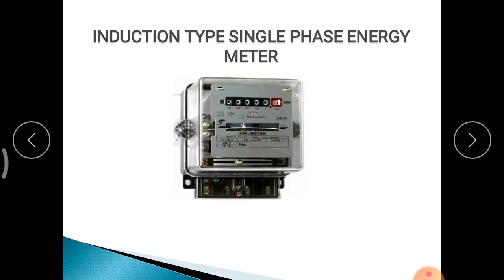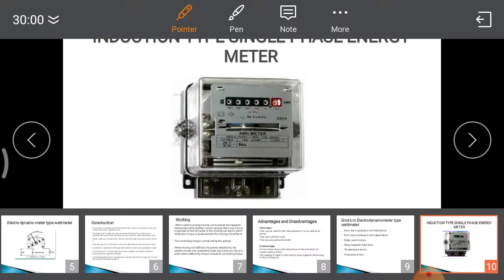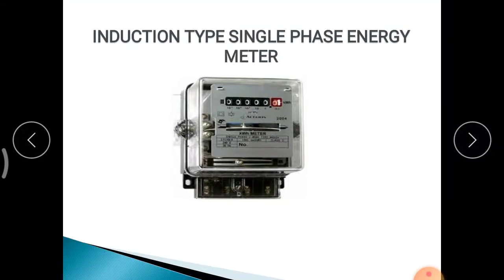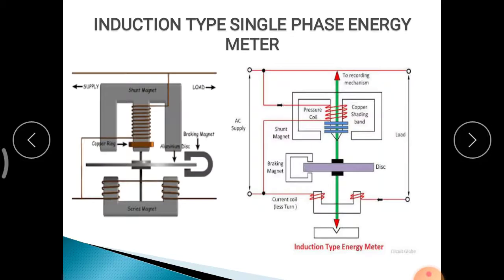Next, the very important topic: Induction type Single-Phase Energy Meter. Most people have seen this in their homes — it has an aluminium disc. Nowadays it is being replaced by digital meters, but it is still used in some homes. It is used to measure energy, and always remember, electrical energy is measured in kilowatt-hours (kWh). The construction diagram shows an M-shaped core for the pressure coil and a rectangular U-shaped core for the current coil.